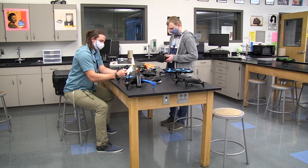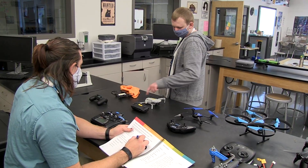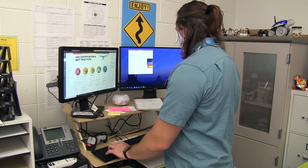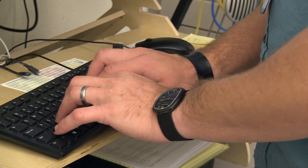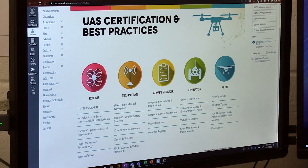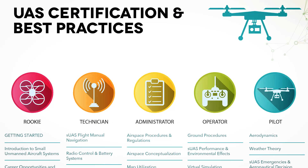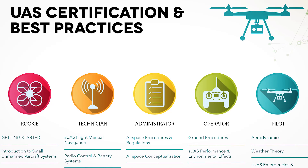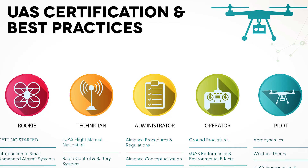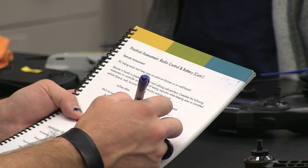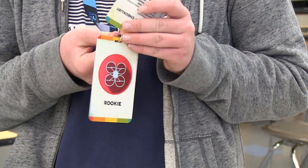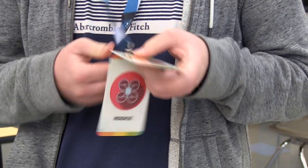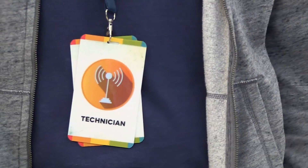When they're flying in industry, students are required to have credentials with them at all times, and in our class we've created credentials to mimic what they would do in industry. We have a rookie, a technician, an administrator, an operator, and a pilot badge, and each one corresponds to a learning strand within the course. They help give students a sense of accomplishment and get them used to carrying credentials just like they would if they were flying for a company or their own business.